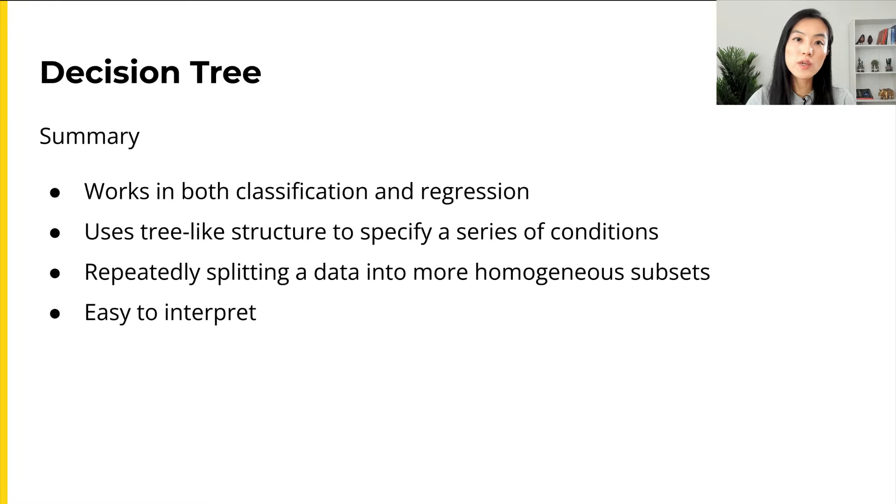In summary, the decision tree model uses a tree-like structure to specify a series of conditions that are tested to determine the label for a sample. It is constructed by repeatedly splitting a data partition into more homogeneous subsets. The resulting tree is often easy to interpret.